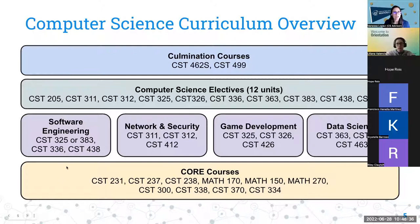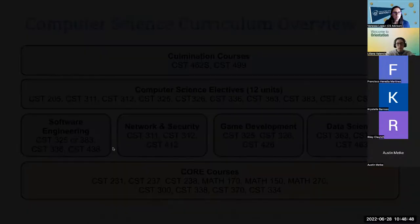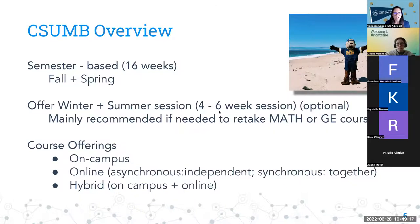Those are the four levels of the computer science curriculum and the requirements needed to earn your bachelor's degree with us. CSUMB operates within a 16-week semester, offering classes primarily in fall and spring. We only require students to take classes in fall and spring, though we do offer optional winter and summer sessions of four to six weeks.